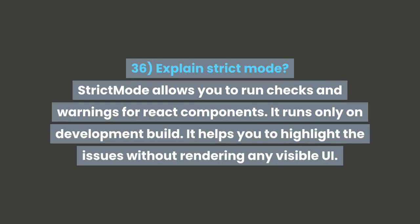Question 36: Explain strict mode. Strict mode allows you to run checks and warnings for React components. It runs only on development builds and helps you to highlight issues without rendering any visible UI.